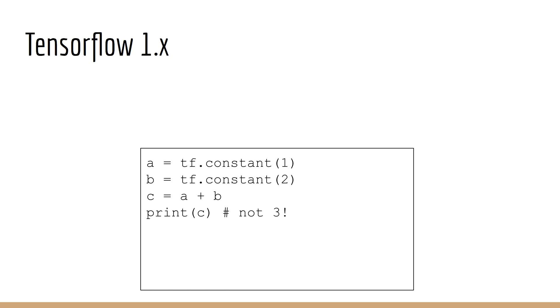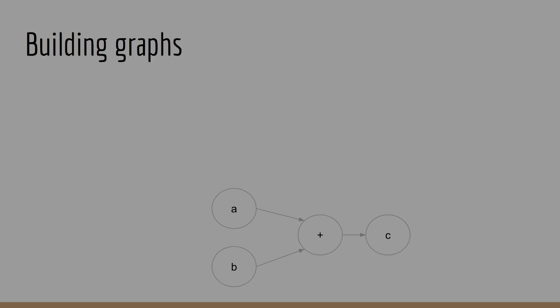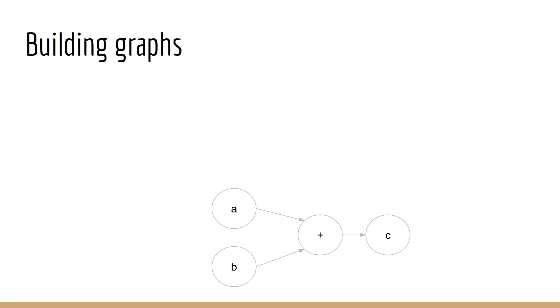So here's some code in TensorFlow 1. You define a variable a, and you define a variable b, and now you say c equals a plus b. Since a equals 1 and b equals 2, and you know math, you might think, aha, c is 3. But in fact, that's not true. If you try to print c, TensorFlow would just tell you it's some generic tensor.